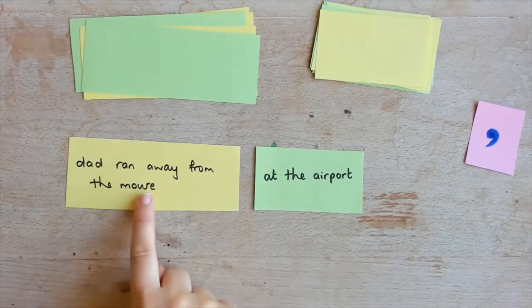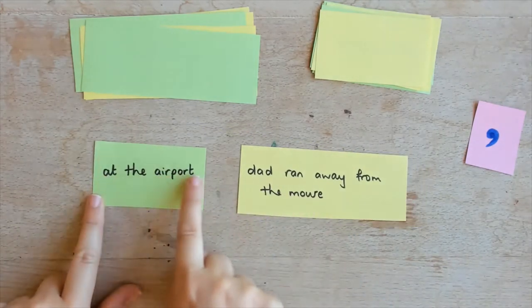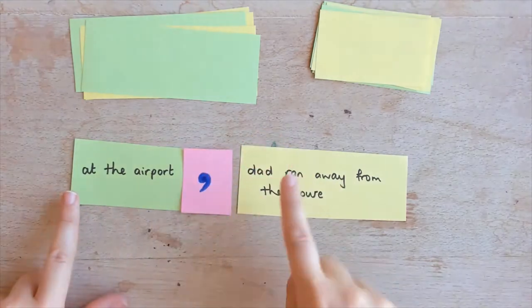Place them face down and pick the top card off each pile to make your nonsense sentence. Try reading them with the adverbial phrase at the end and then at the start of the sentence. Can they discuss which way sounds better? It will be different for each sentence.